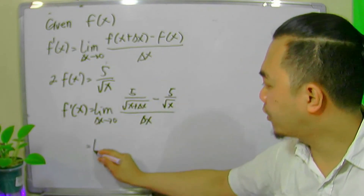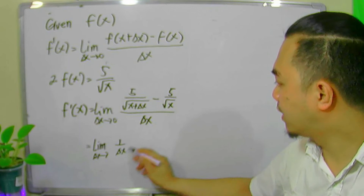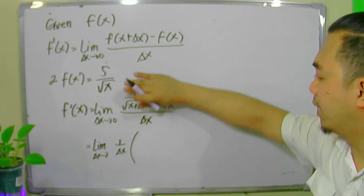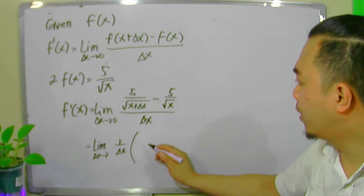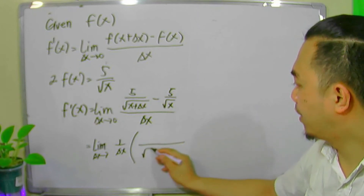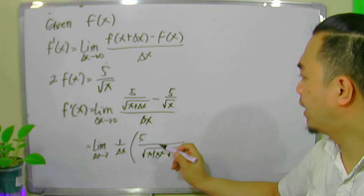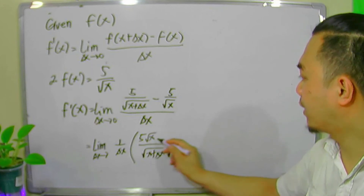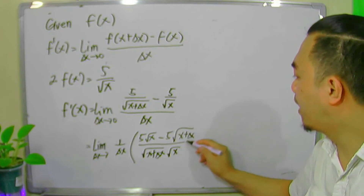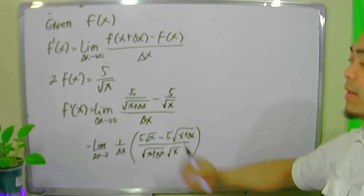We substitute x plus delta x to all the x's in the function, giving 5 over square root of x plus delta x, minus f of x which is 5 over square root of x. This expression can be written as 1 over delta x times the combined numerator: 5 square root of x minus 5 square root of x plus delta x, all over square root of x times square root of x plus delta x.